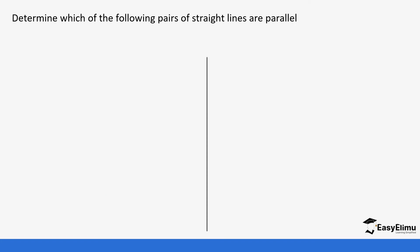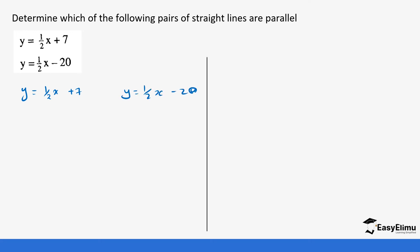Now there's this example: determine which of the following pairs of straight lines are parallel. We start with this pair and check if they are parallel. Remember, write the two equations side by side. One of them is y = ½x - 20. You notice both equations are in the form y = mx + c. Our m is ½ (positive) in the first equation, and m in the second equation is also positive ½. This tells us that these two equations are actually parallel.